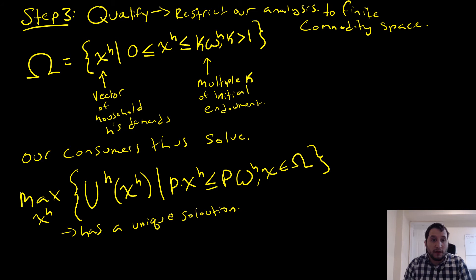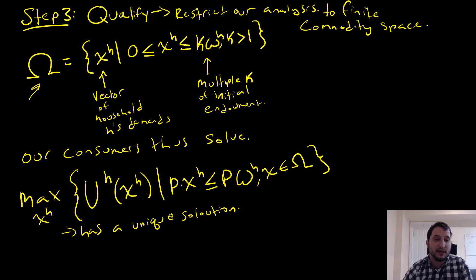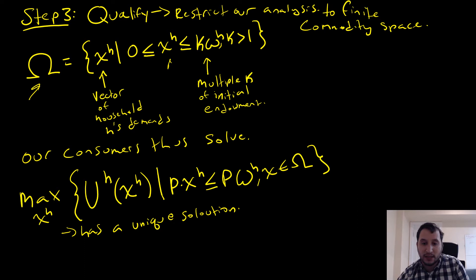Step number three is that we're going to qualify our analysis by restricting it to a finite commodity space, because we can't go straight to our fixed point theorems. Our feasible set Ω is going to be our vector of household demands such that demands are between zero and some multiple of that household's initial endowment. Thus households are able to solve the standard utility maximization problem, and since u_h is quasi-concave, we have a unique solution.